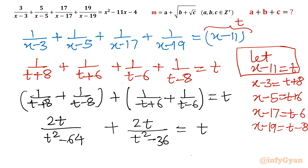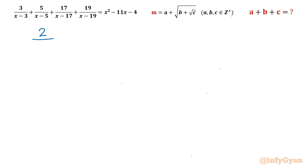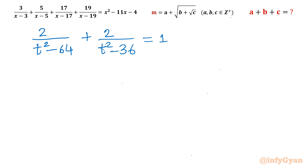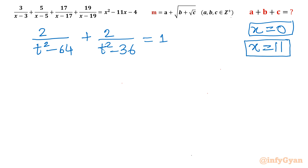We can cancel t from both sides, giving t = 0 as a solution, meaning x = 11. That accounts for two of our solutions so far (x = 0 and x = 11). What remains after cancelling t is: 2/(t²-64) + 2/(t²-36) = 1, which will yield 4 more solutions.